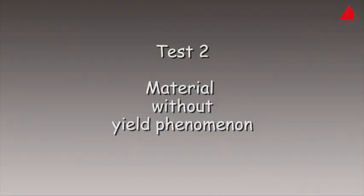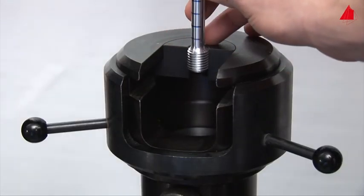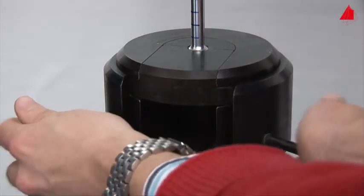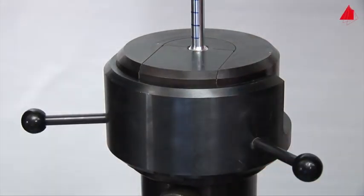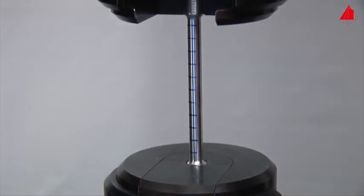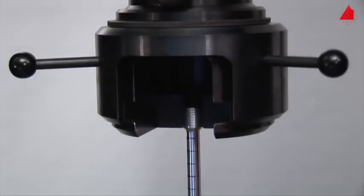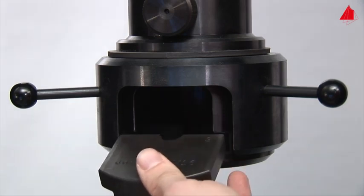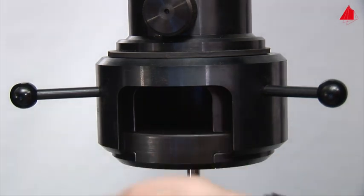In the second tensile test, a material without yield point phenomenon is to be tested. In this case, it is a precipitation strengthened aluminum alloy. The test piece has exactly the same shape and dimensions as the specimen in the first test.